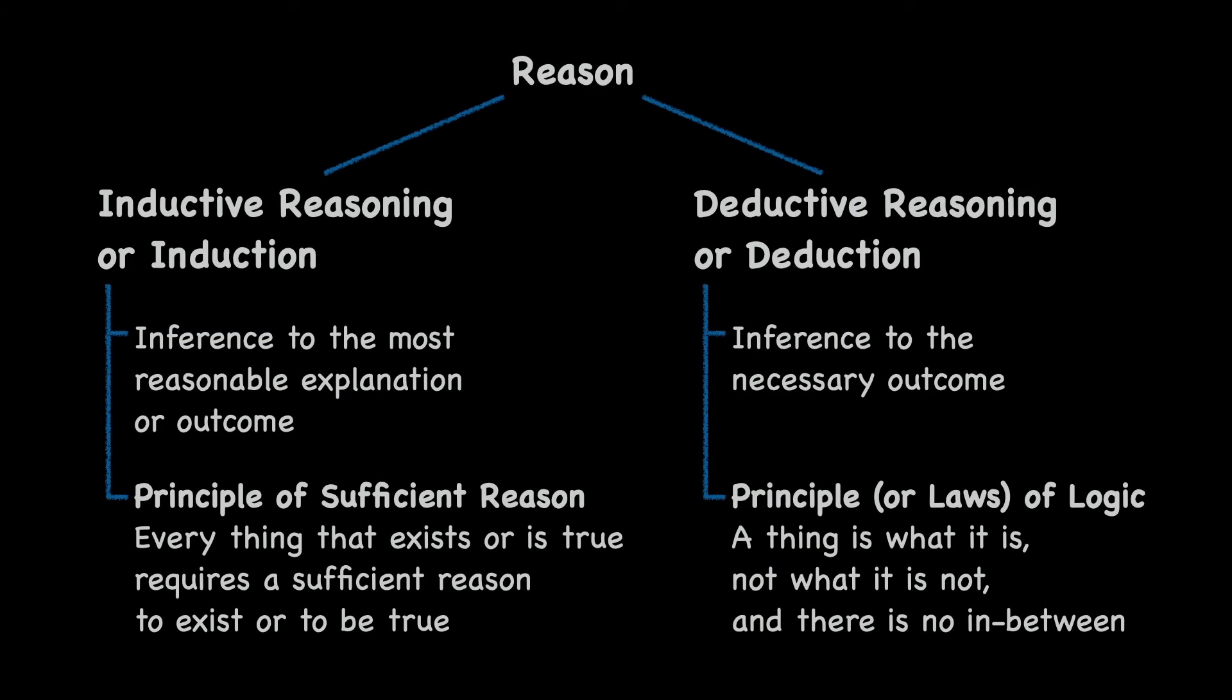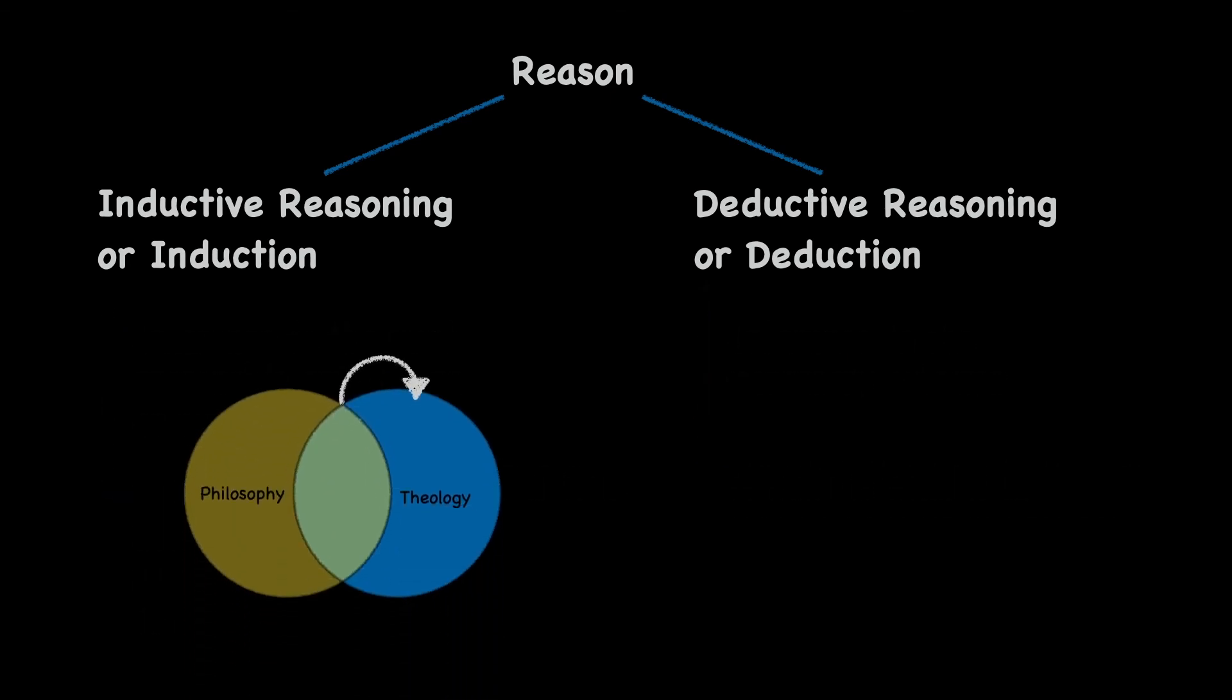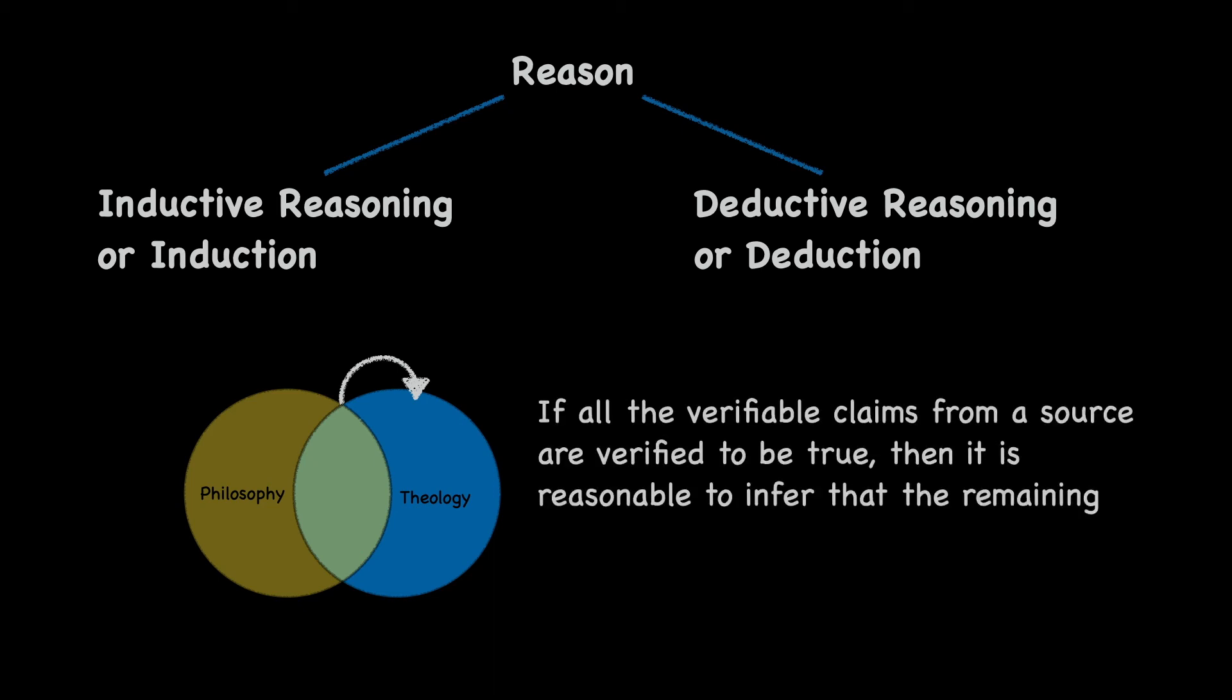And so, implementation of reason is a back and forth between induction and deduction following observations. For a complete example, let's go back to the reasoning made in the previous video on the leap of faith, where we said: if all the verifiable claims from a source are verified to be true, then it is reasonable to infer that the remaining unverifiable claims from that source are also true. Let's break down this argument into its reasoning types.